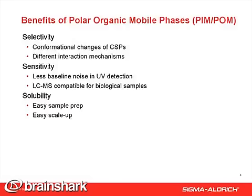This slide shows three major benefits of using polar mobile phases: selectivity, sensitivity, and solubility. First, selectivity — conformational changes of chiral stationary phases can induce different selectivity with different mechanisms. Secondly, compared to normal phase, polar organic phase has lower UV background, and it can also be LC-MS compatible for biological samples. And lastly, polar organic phase has higher solubility for the sample and is also easier for scale-up purposes.